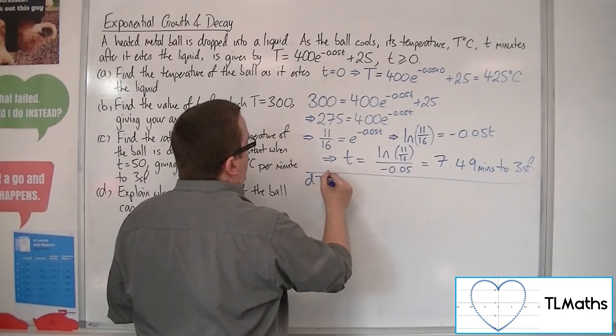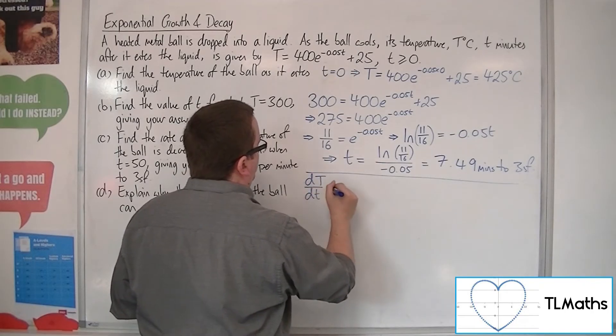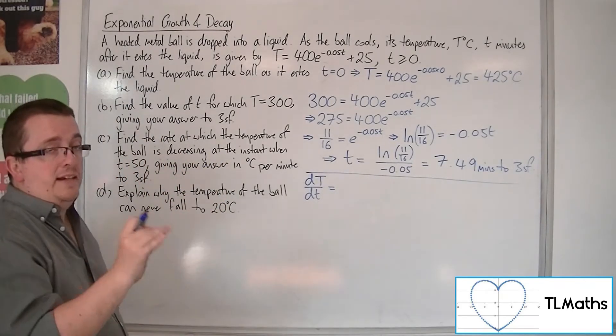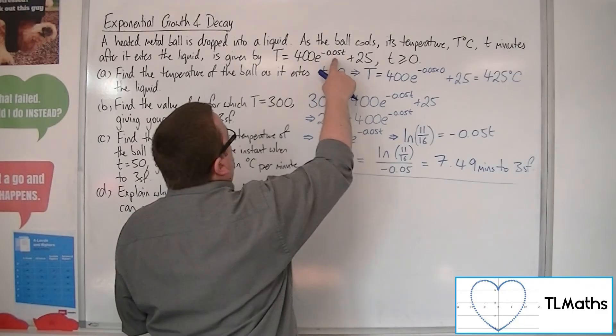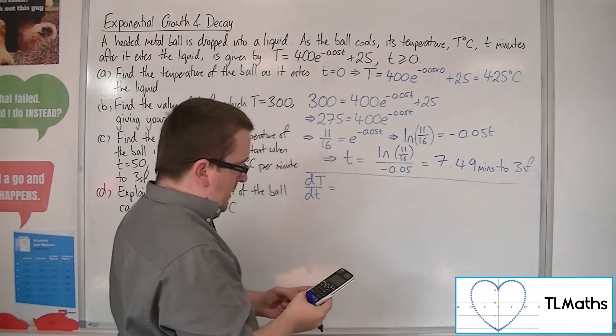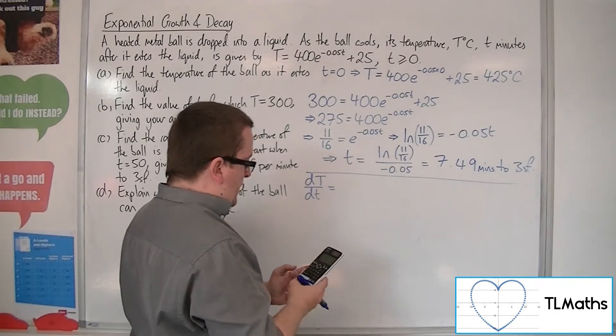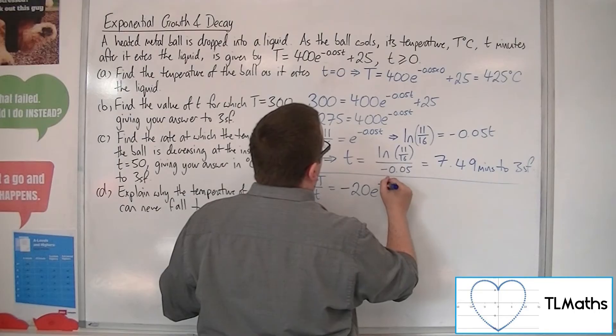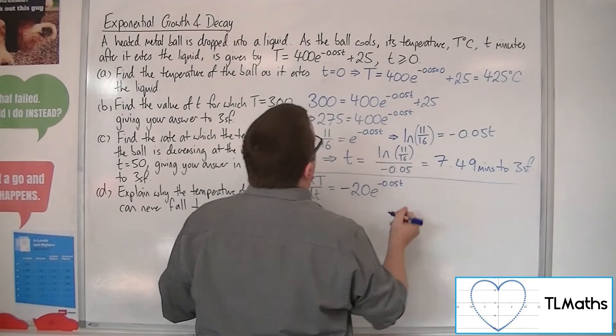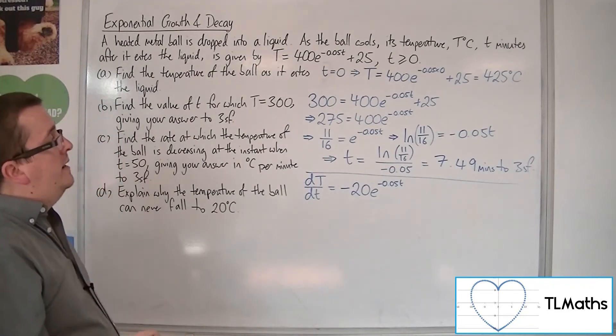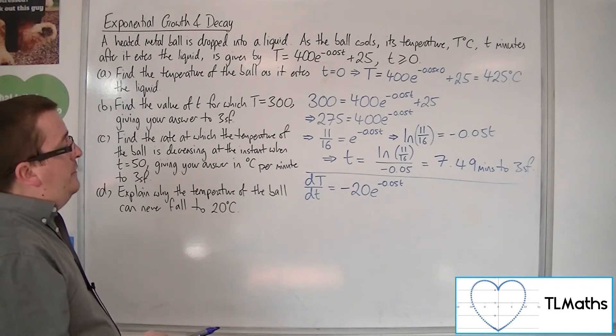So, we want to find the gradient function of this. So, that would be DT by DT. So, D capital T, temperature, by D lowercase t, time. So, the minus 0.05 will come down and multiply with the 400. So, 400 times minus 0.05 is minus 20. E to the minus 0.05T. And because it's a gradient function, the plus 25 will just disappear.